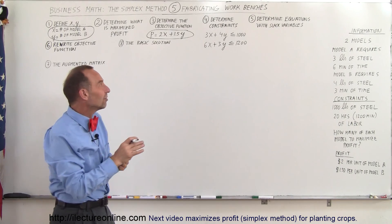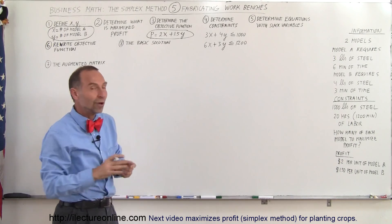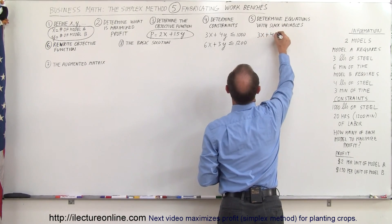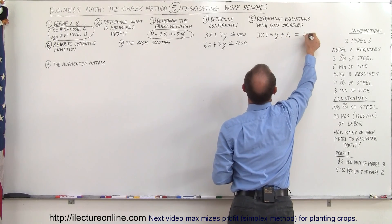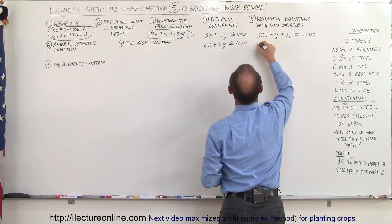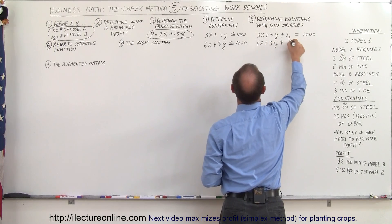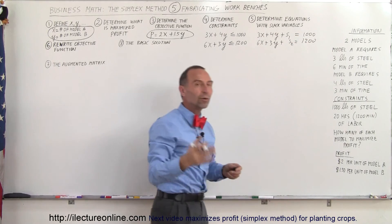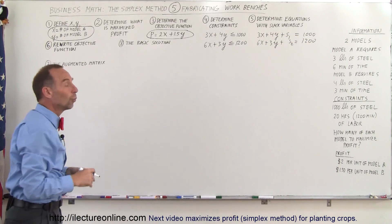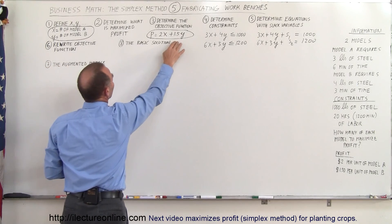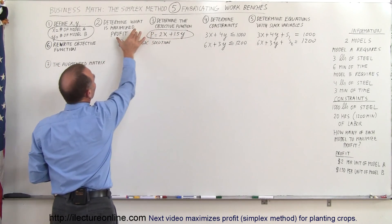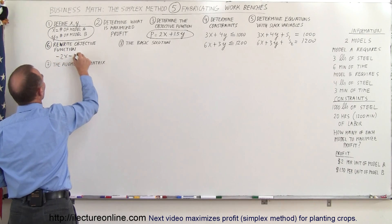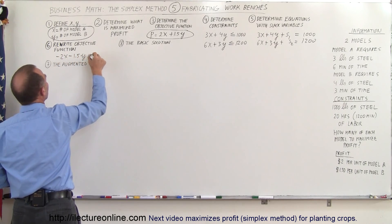The second constraint is labor. We need six minutes for A and three minutes for B, so 6x plus 3y must be less than or equal to the total minutes of labor available. We turn those inequality constraints into equations using slack variables: 3x + 4y + s1 = 1,000 and 6x + 3y + s2 = 1,200. The objective function is rewritten by moving everything to the left side: minus 2x minus 1.5y plus p equals zero.